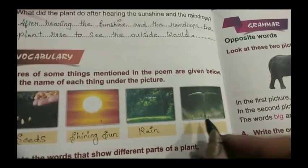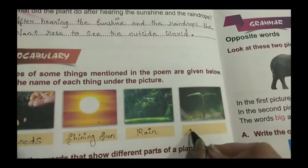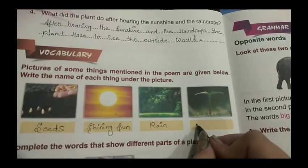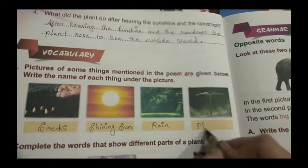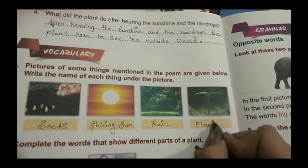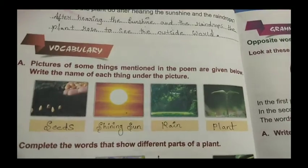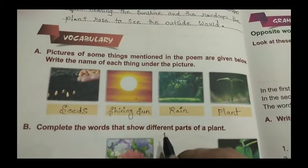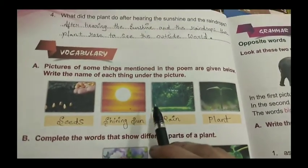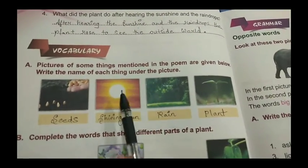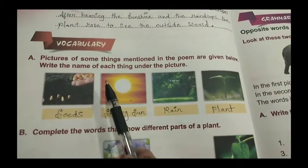Then the fourth picture, we see a plant. So we will write here P, L, A, N, T — plant. So here we have completed exercise number A of vocabulary.